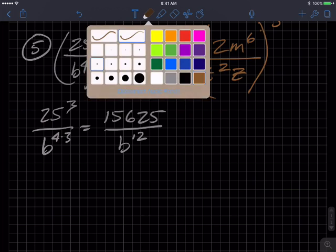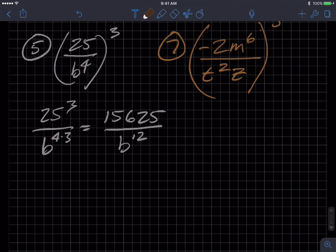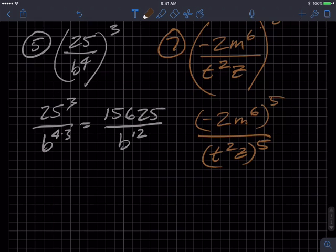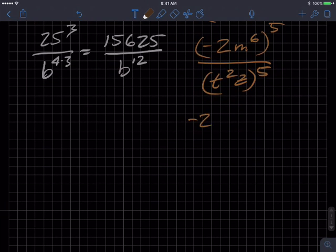And then this brown guy - you guys can give me feedback whether brown doesn't show up very well. So this is negative two times M to the sixth over T squared Z, all raised to the fifth. We're going to do this two M to the sixth - this is like the fourth rule - and then T squared Z to the fifth, which then is negative two to the fifth, M to the six times five which is 30, over T to the 10th Z to the fifth.